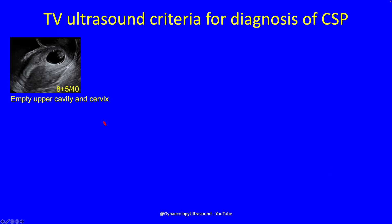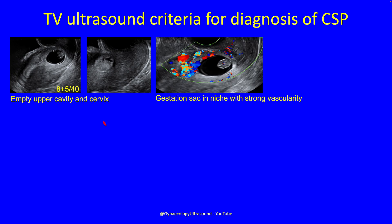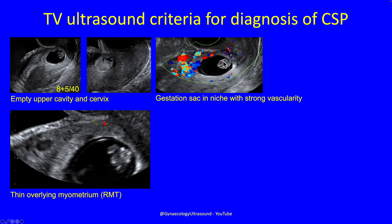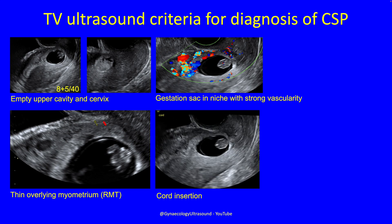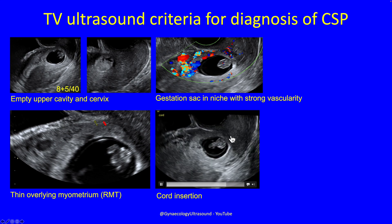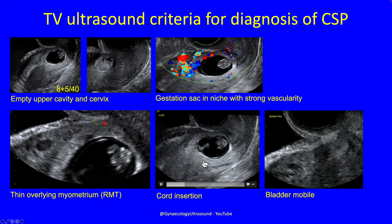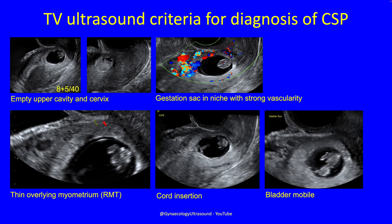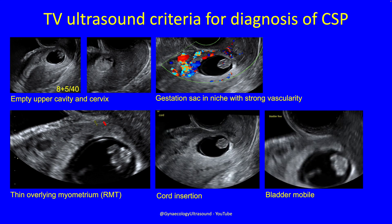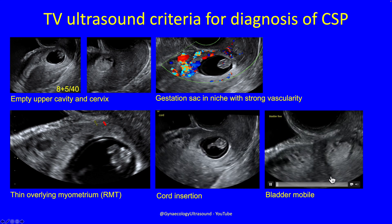Showing an example: we can see an upper endometrial cavity which is empty, and the cervix is empty. This patient was eight and a half weeks gestation. You can see the cervix is empty and there is strong vascularity with very thin overlying residual myometrial thickness. You can also look for the cord insertion — even at this gestation you can see the cord and where it's pointing, which shows the trophoblast. It's also useful to assess whether the bladder is mobile; looking from side to side and pressing slightly, you can see the bladder is relatively free and not being invaded by trophoblast.